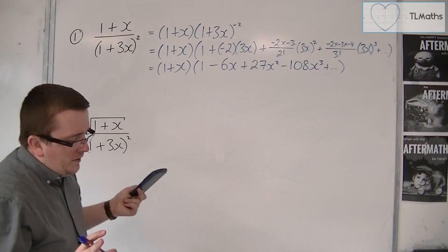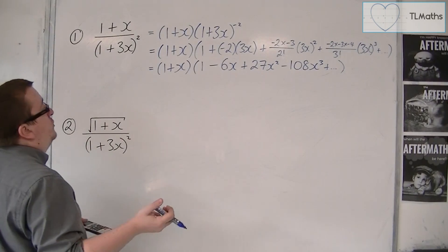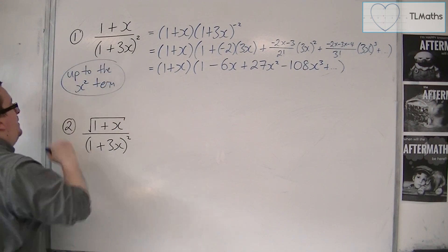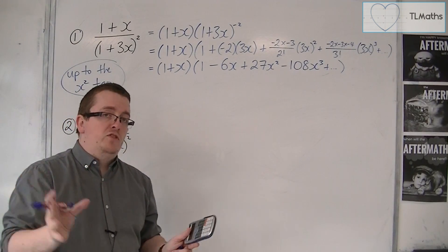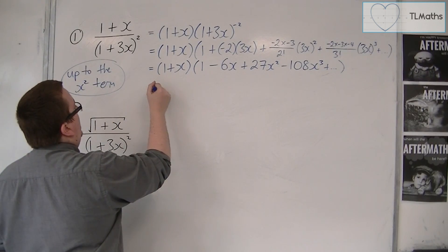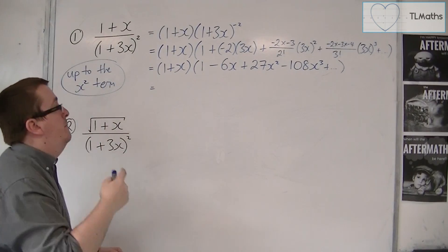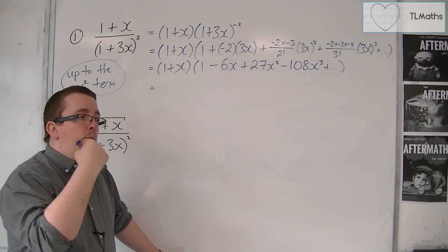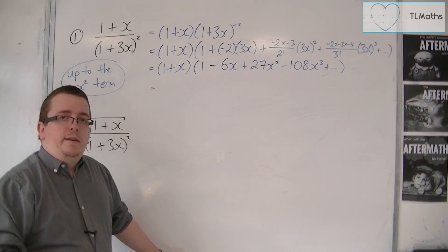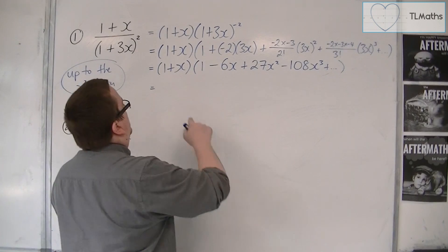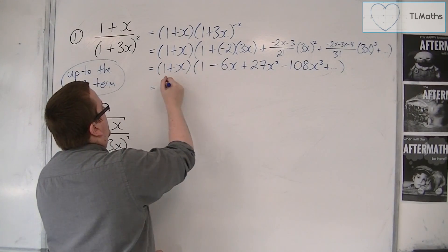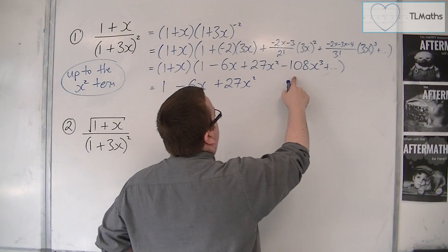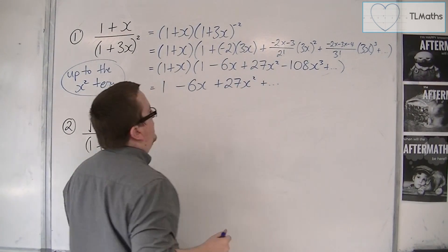Now let's say we wanted these expansions up to the x² term — we don't want any x³, x⁴, or higher. When we expand (1 + x) by multiplying all terms together, we ignore any term that produces x to a power higher than x². So we get one times each of these terms: one times one, one times minus six x, one times 27x². One times minus 108x³ is an x³, so I don't want that — there are a load of other terms I can ignore.